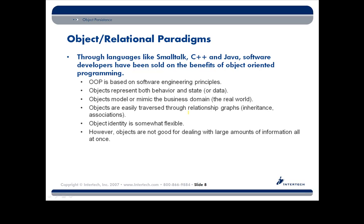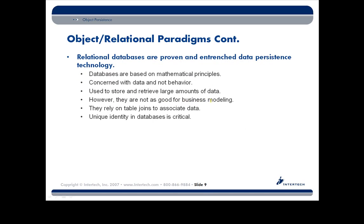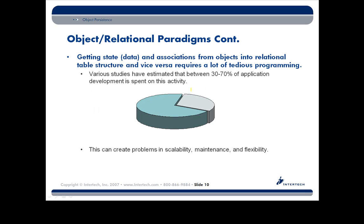Through the years, in many different object languages like Smalltalk, C++, and of course Java, developers have been sold on the benefits of object-oriented programming. It all revolves around the fact that we like to model and mimic the things in the real world as our objects. We've also been sold on the benefits of relational database technology — they store and retrieve large amounts of information very quickly and efficiently. Where we run into problems is the fact that these two systems don't always make it easy for engineers to build applications. There's a lot of tedious programming involved, and some studies have shown that as much as 30 to 70% of our development time is spent on this activity.